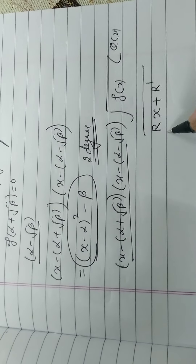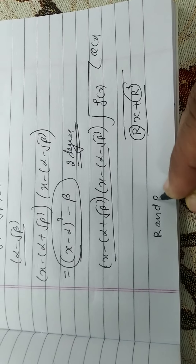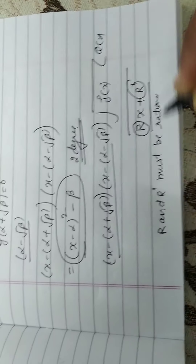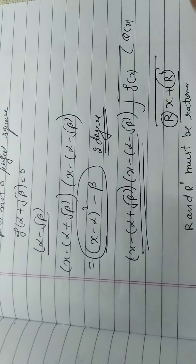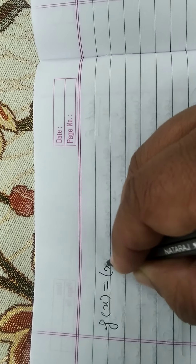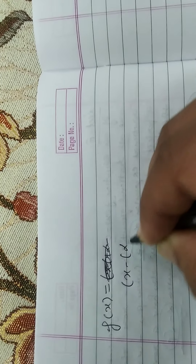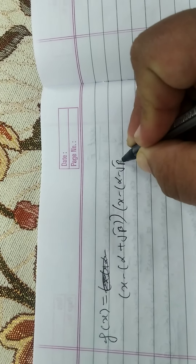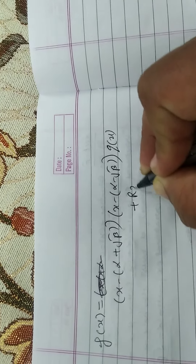क्योंकि divisor दो degree की है, इसलिए reminder की degree एक होगी। Reminder को r और r' से लिखेंगे। r और r' दोनों rational होंगे क्योंकि f(x) के coefficients rational हैं और divisor के भी rational हैं। So we get: f(x) = (x - (α + √β))(x - (α - √β)) · q(x) + rx + r'.